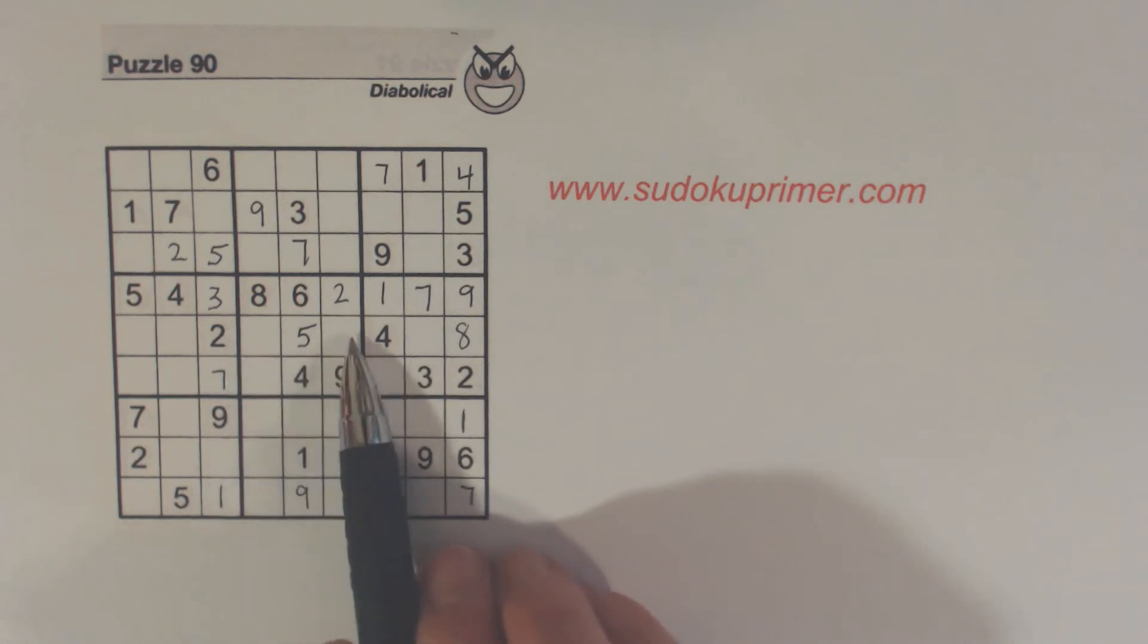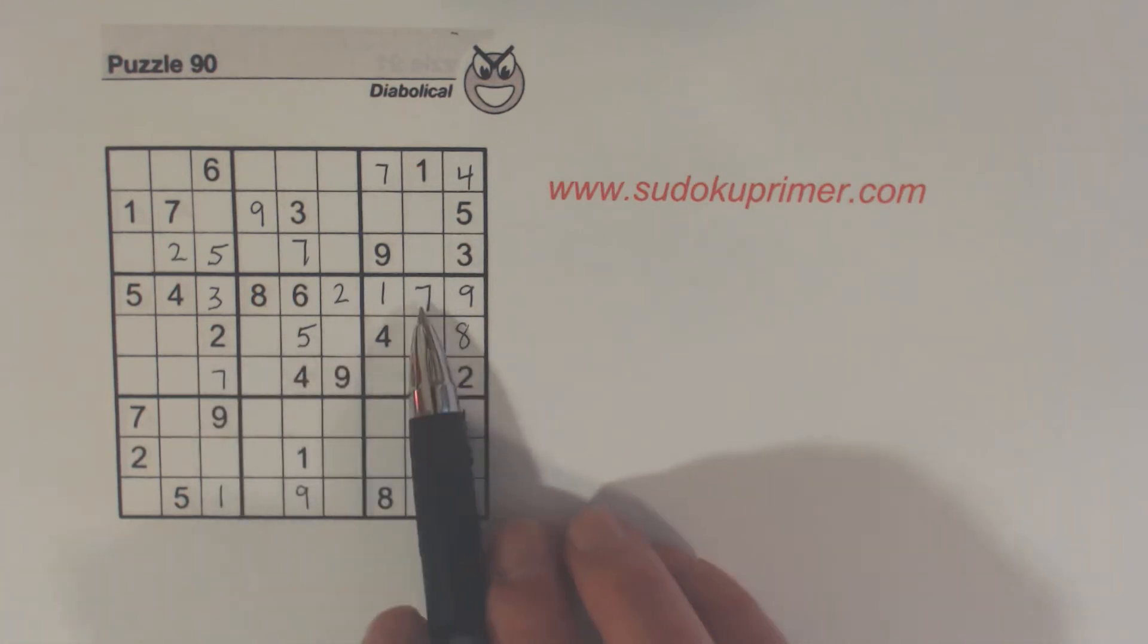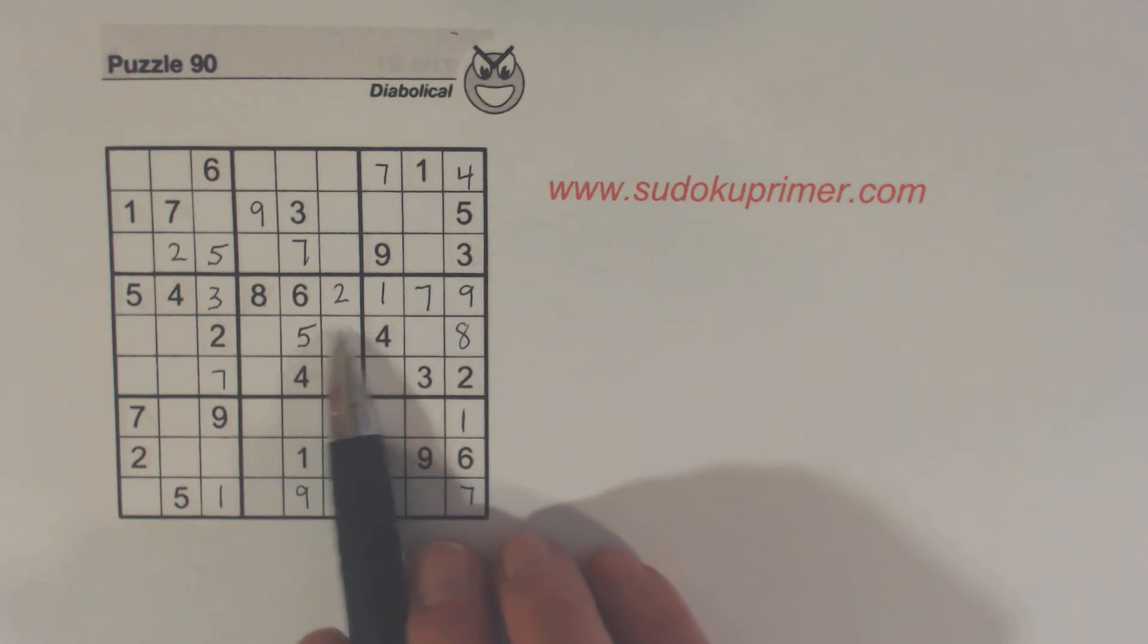Now in reality, we have 3, 7 twins here. So we have a 7 here, 7 here, 3 here, 3 here. So these are 3, 7 twins. So we know that's a 1.